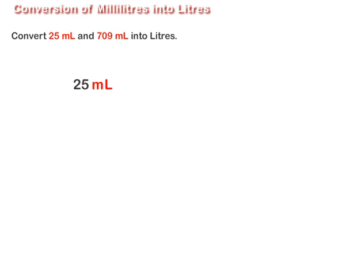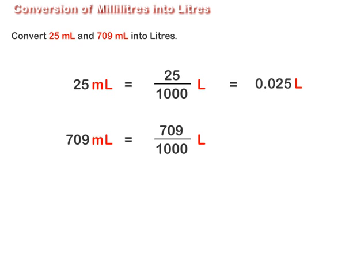To convert 25 milliliters into litres, we divide 25 by 1000, which is equal to 0.025 litres. To convert 709 milliliters into litres, we divide 709 by 1000 and get 0.709 litres.